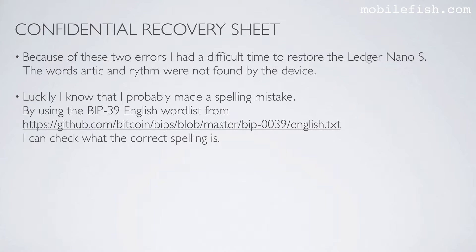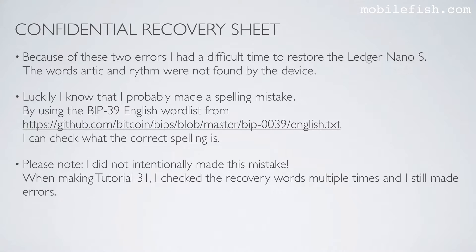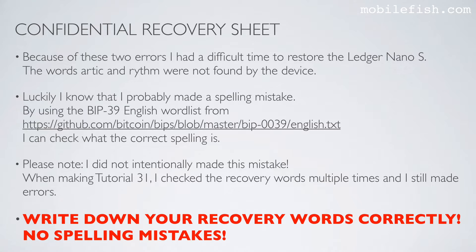Luckily I know that I probably made a spelling mistake. By using the BIP39 English word list from this link, I can check what the correct spelling is of these two words. Please note, I did not intentionally make this mistake. When making tutorial 31, I checked the recovery words multiple times and I still made errors. So please write down your recovery words correctly — no spelling mistakes — otherwise you will have a difficult time to restore the Ledger Nano S, or even not at all.